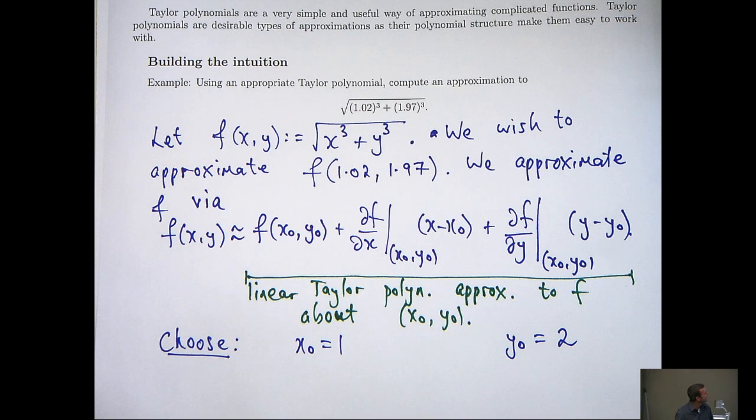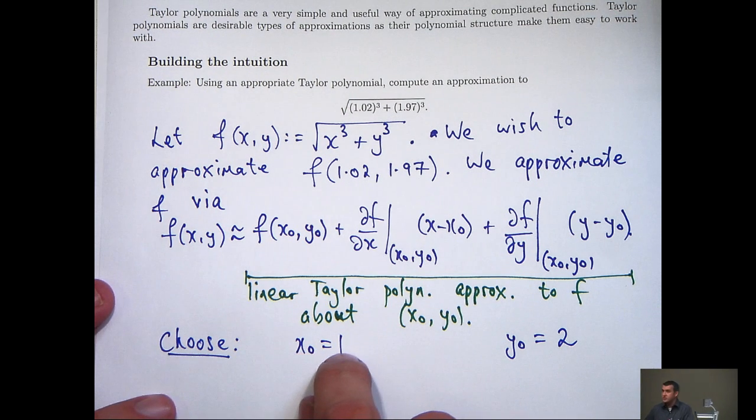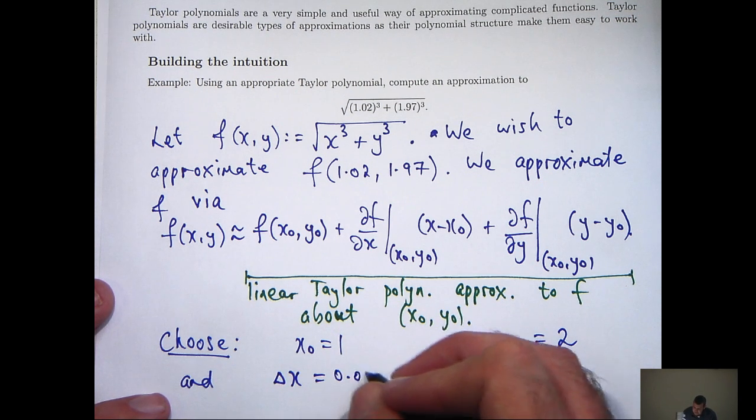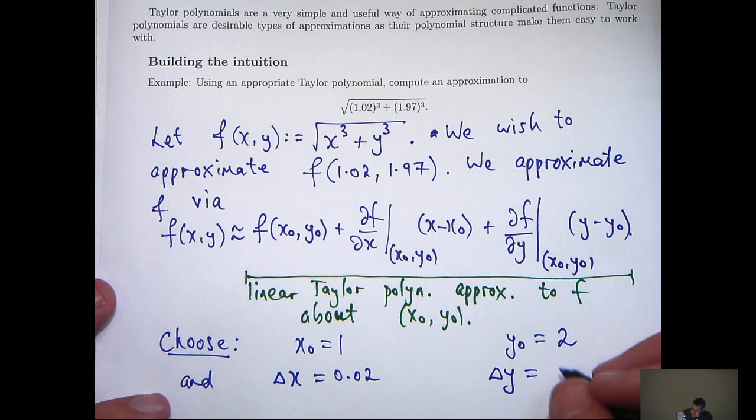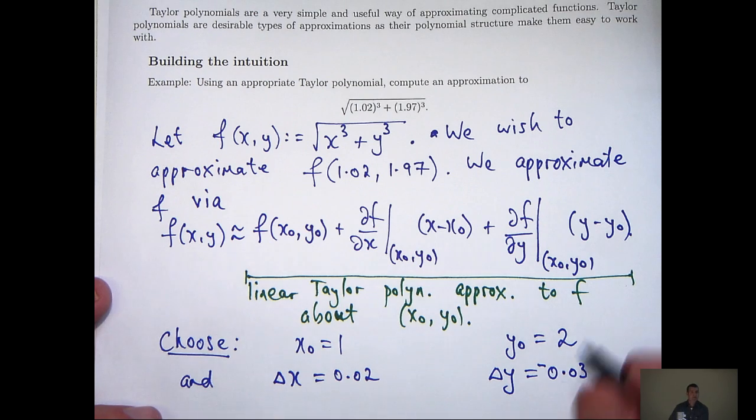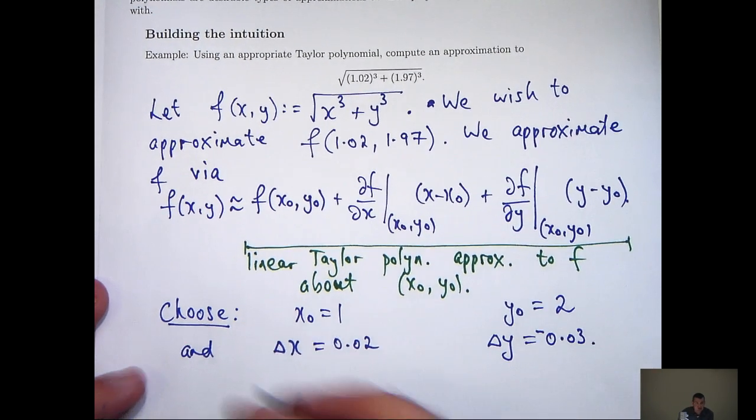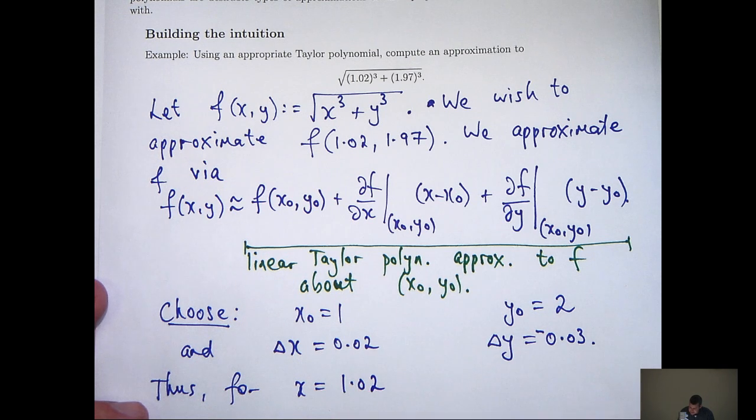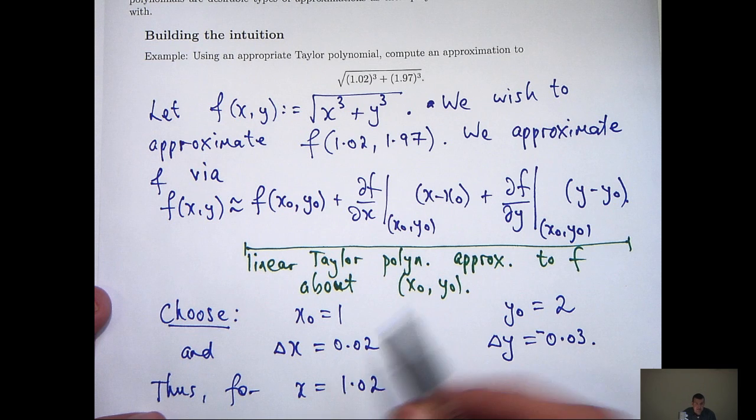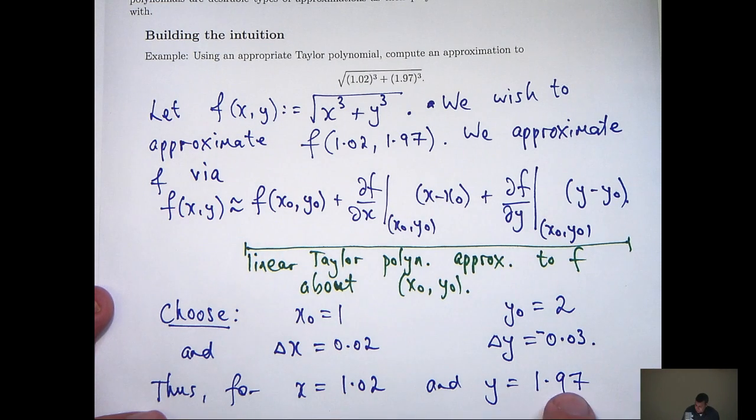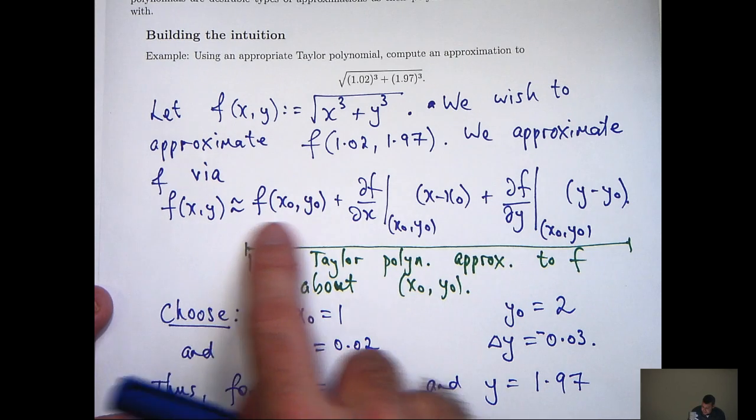Now, if I look at the difference between x0 and 1.02 and y0 and 1.97, then I see that there's a small difference between the two that I'm going to denote by delta x and delta y, respectively. Okay, so what I'm going to do now, for x equals 1.02 and y equals 1.97, which is this plus this, I can take that and substitute in here.